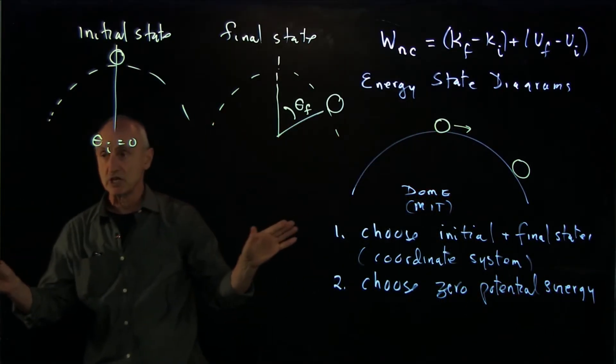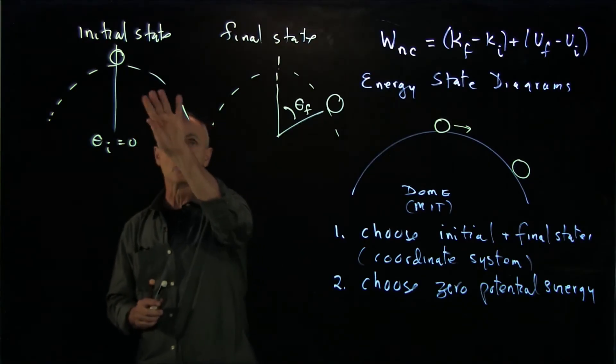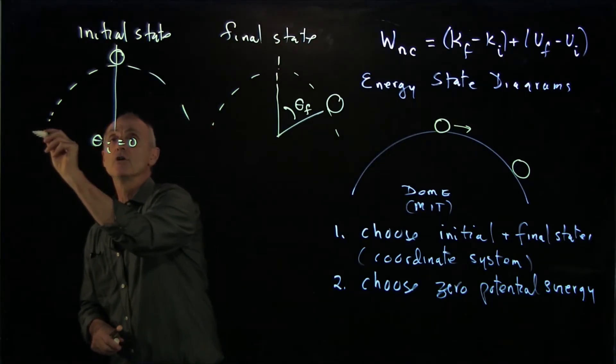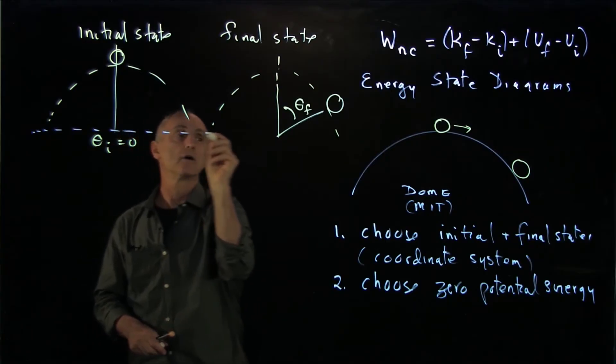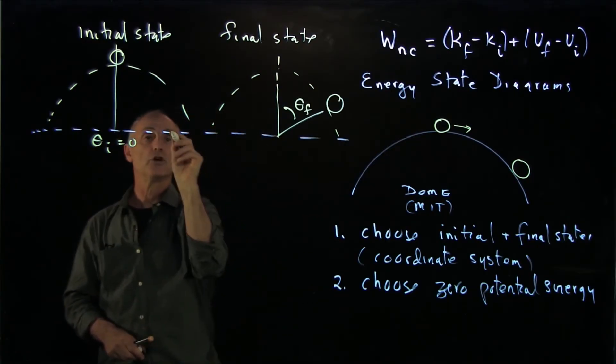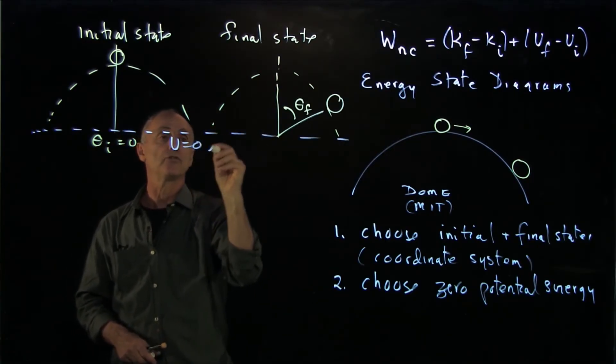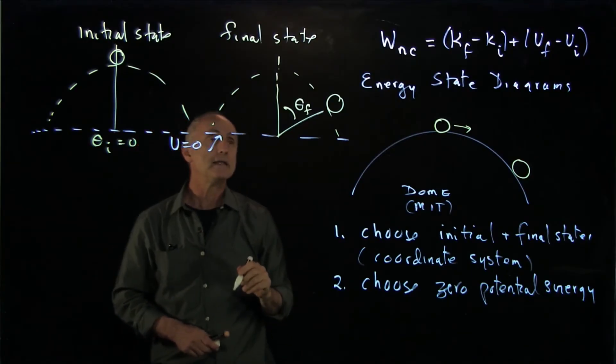And in this diagram, I can choose my zero for potential energy anywhere I want. But I want to draw it on my initial and my final states. So I'm going to choose it right here. And I'll denote this as U equals 0.